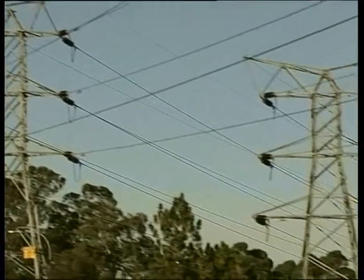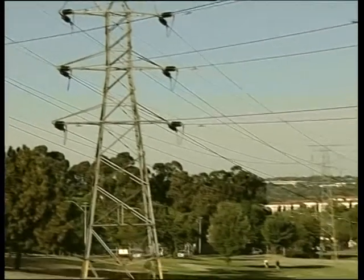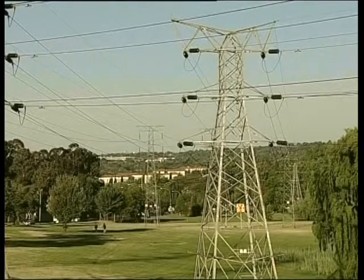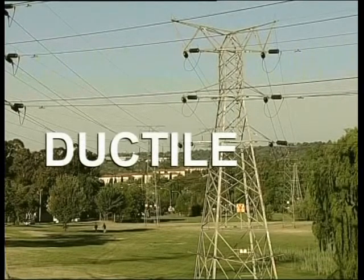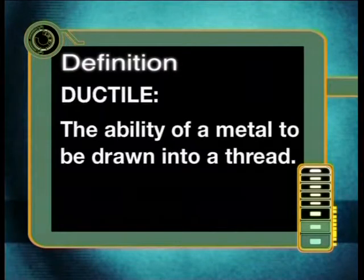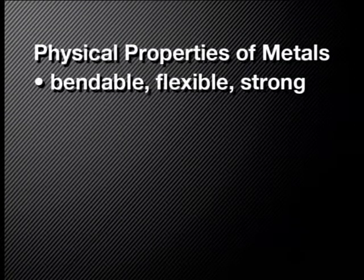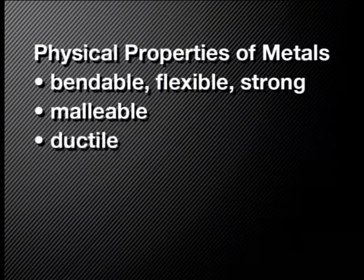Metals can also be drawn into a wire. You can see this by looking at the copper cables used to conduct electricity. To describe this property, we say the metal is ductile — the ability of a metal to be drawn into a thread. From our experiments and observations of the world around us, we can conclude that metals are malleable and ductile.